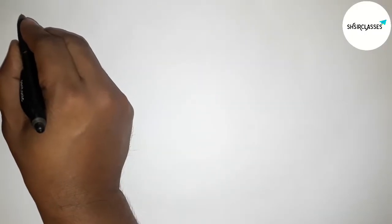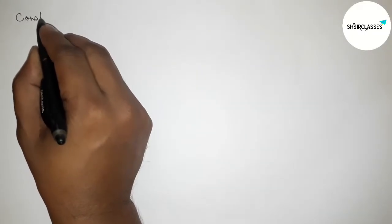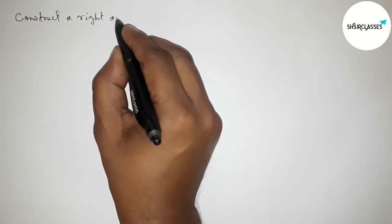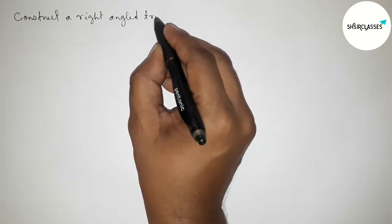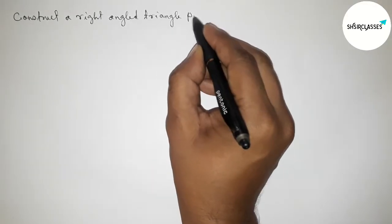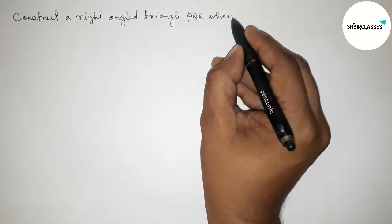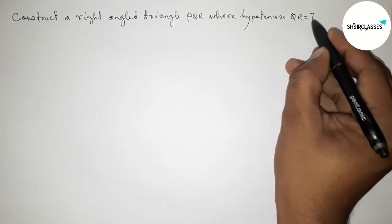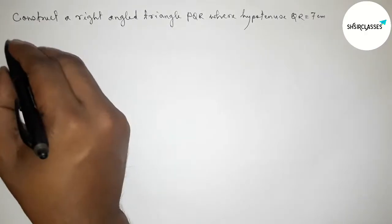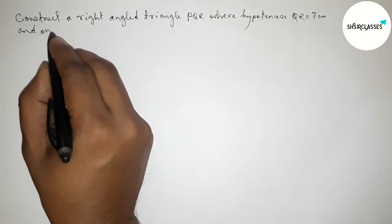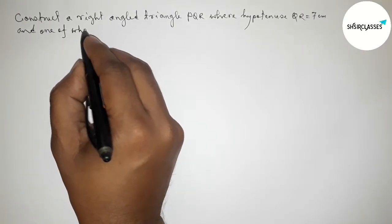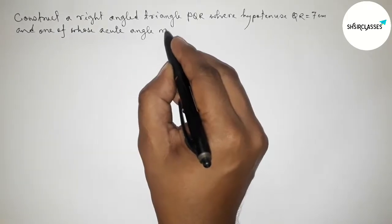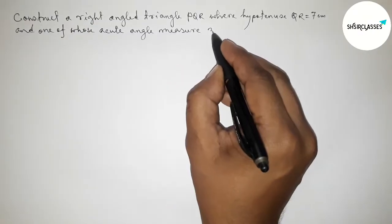Hi everyone, welcome to SI Share Classes. Today in this video we have to construct a right angle triangle PQR where the hypotenuse QR equals 7 centimeters and one of whose acute angles measures 30 degrees. I am going to construct this right angle triangle in an easy way, so please watch the video till the end. Let's start the video.